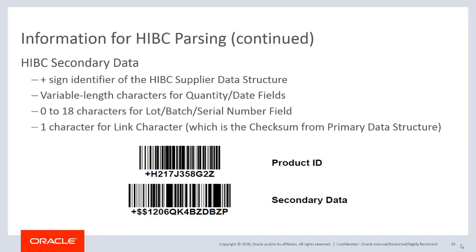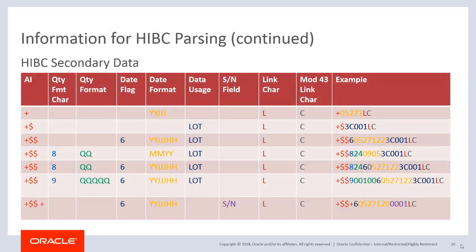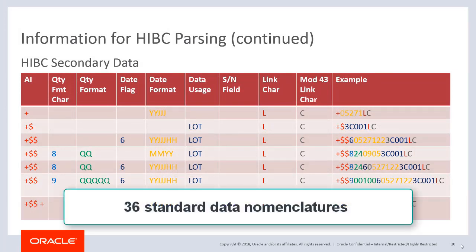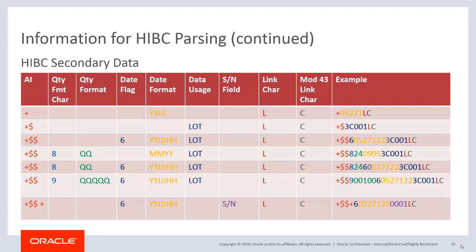The format of the secondary data barcode is dependent on the data required to be encoded. If secondary data is provided in a separate barcode, it always begins with a plus symbol and the second character is either a numeric value or a dollar symbol. The HIBC secondary data includes a total of 36 standard data nomenclatures. Secondary data consists of a symbology identifier, application identifier, quantity format character, quantity format, date usage flag, date format, data usage indicating a lot or serial link character — which should match the corresponding check character of primary data — and a check character.